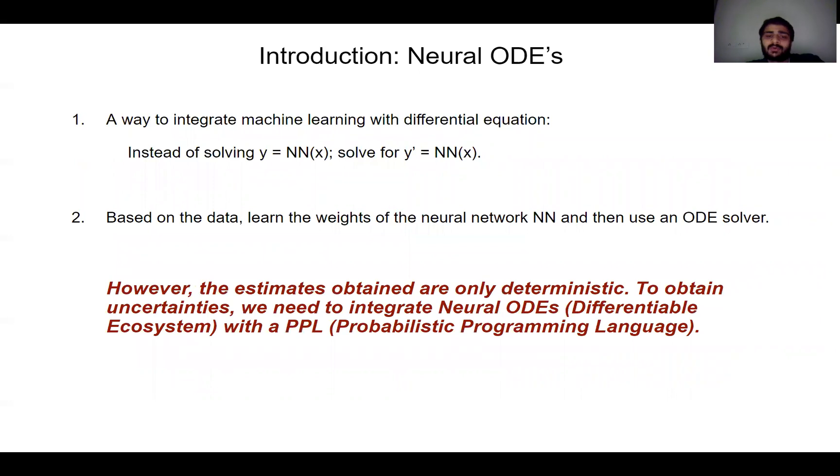A simple way to describe Neural ODEs is that instead of learning the non-linear transformation between the input and output, here we learn the structure governing the transformation. Thus, instead of learning y equal to NN of x, we are learning y dash equal to NN of x. Why do we do this? One reason is that solving such a form using Euler's method, what we get is equivalent to a residual neural network. However, with this approach, the Neural ODEs estimates are deterministic. To obtain error estimates, we need to combine Neural ODEs with Bayesian methods. Thus, we need to efficiently combine a differentiable programming ecosystem with a probabilistic programming one.